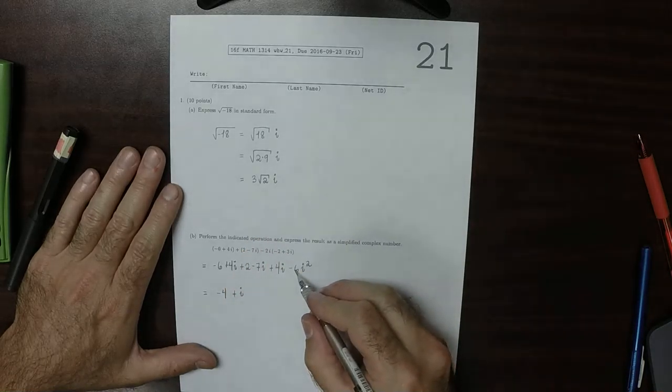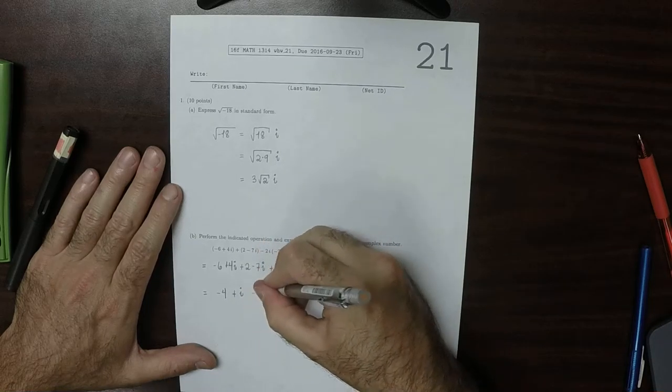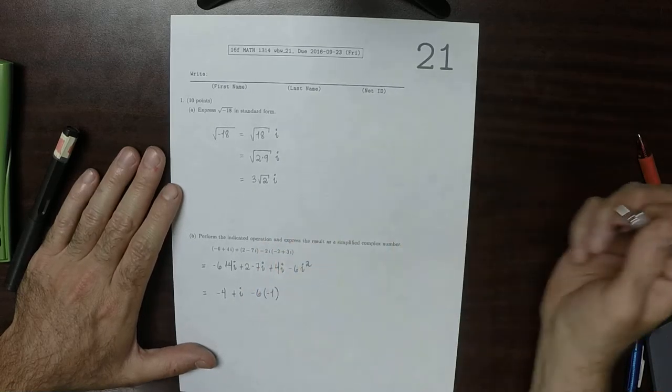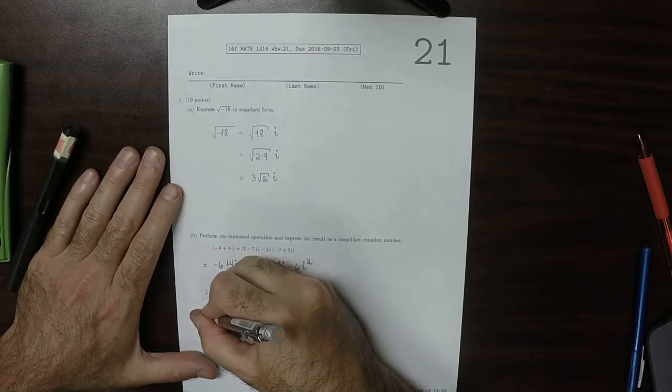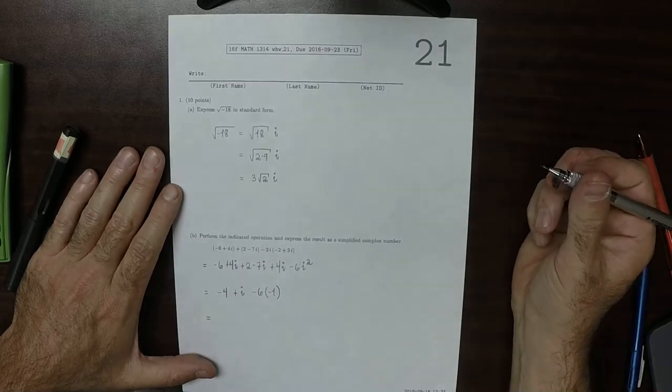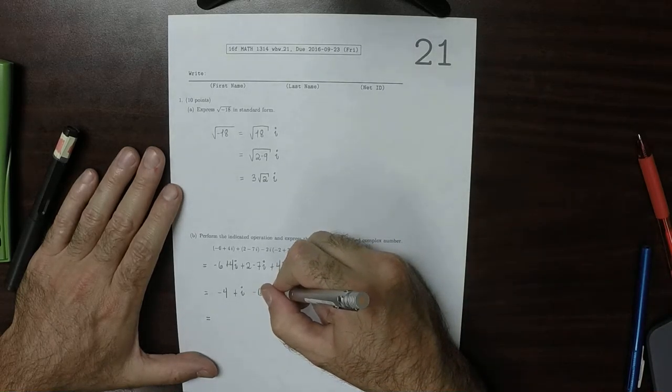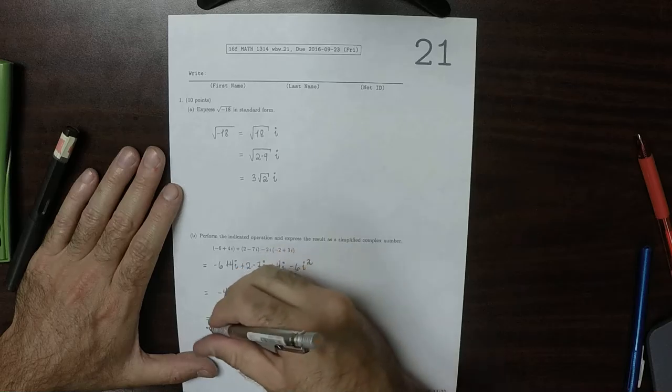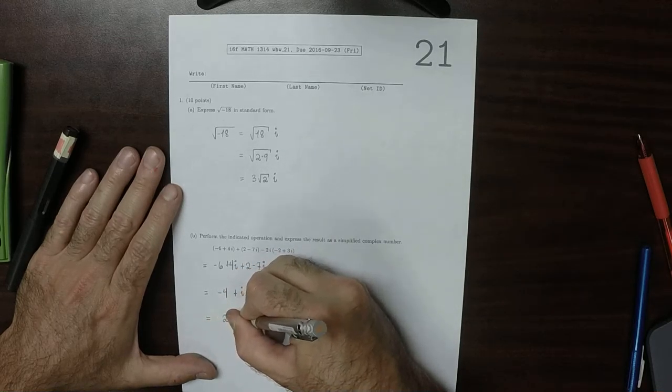And then negative 6i squared, well that's minus 6, and i squared is negative 1. So that would be negative 6 times negative 1. That's 6, so then we'll add that to 4. That would be 2, and then plus i.